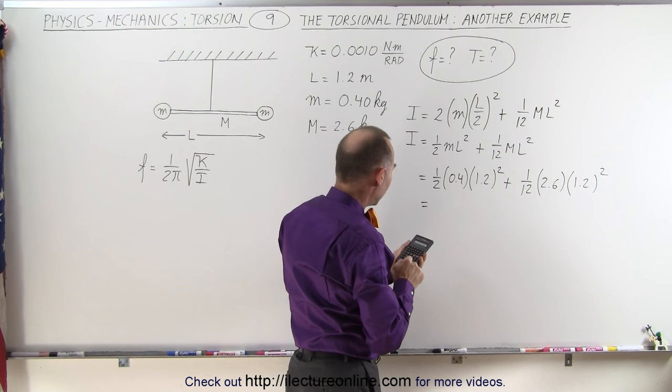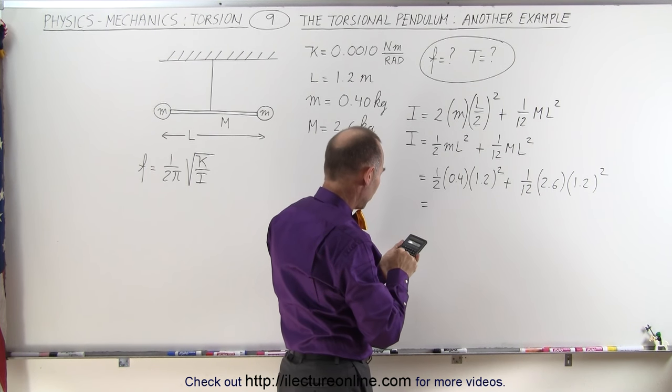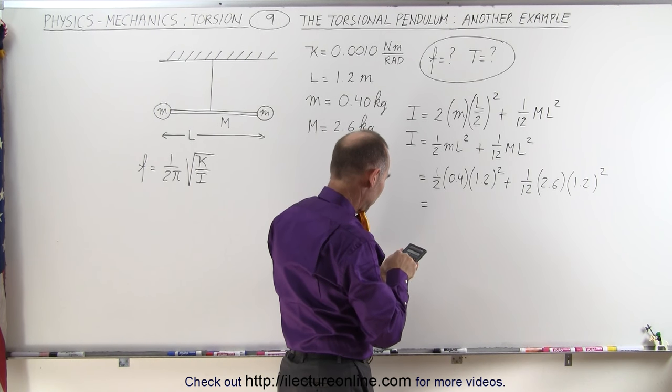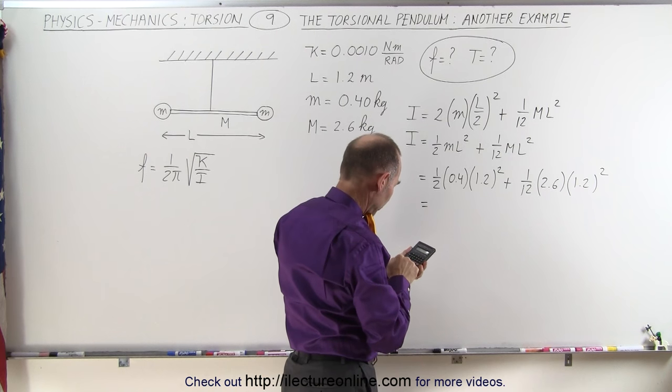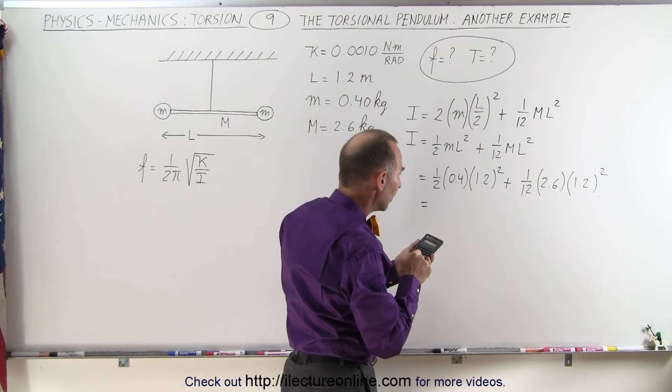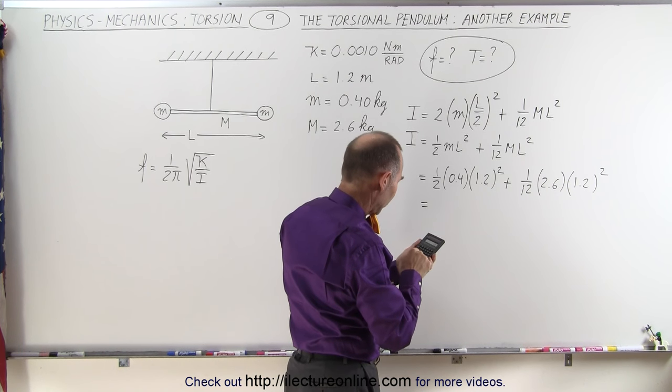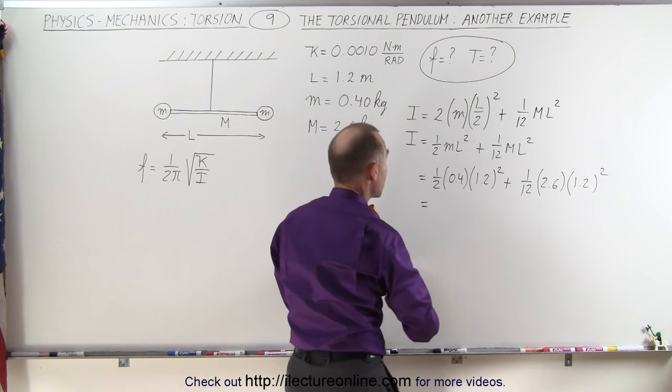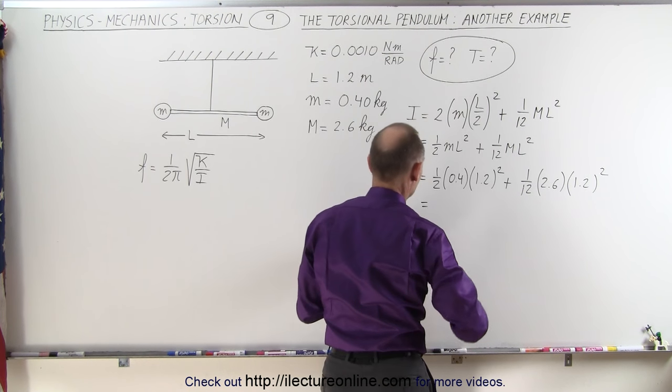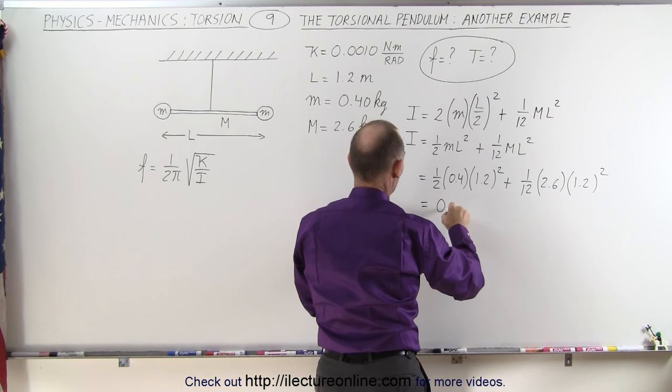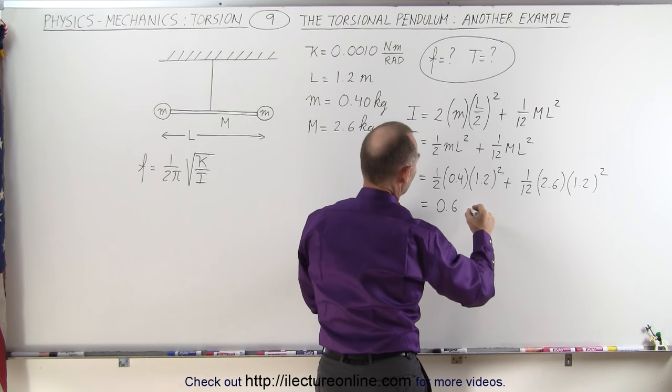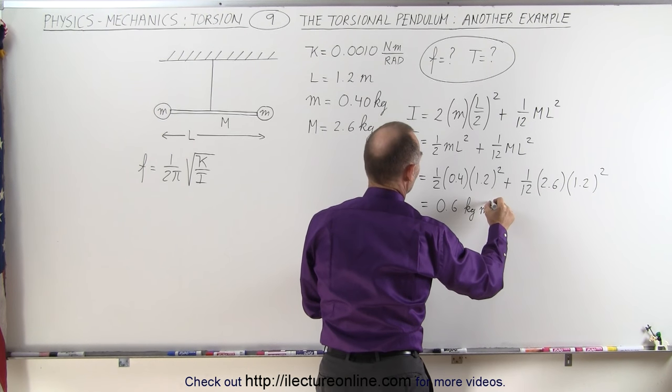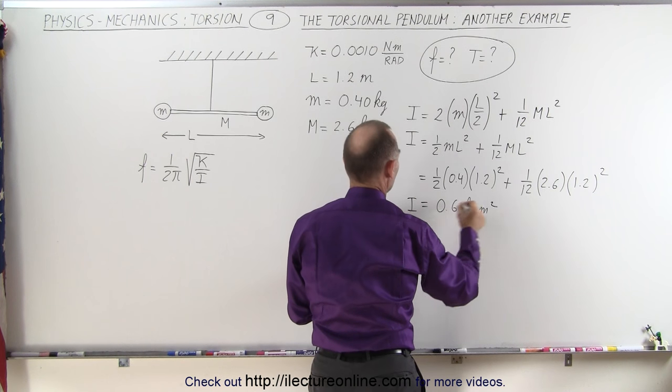That is equal to 1.2² times 0.4 times 0.5 plus 1.2² times 2.6 divided by 12, which equals a moment of inertia of exactly 0.6 kilograms meters squared. That should be a 2 and there it is.